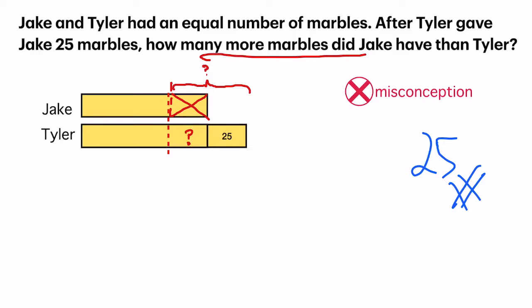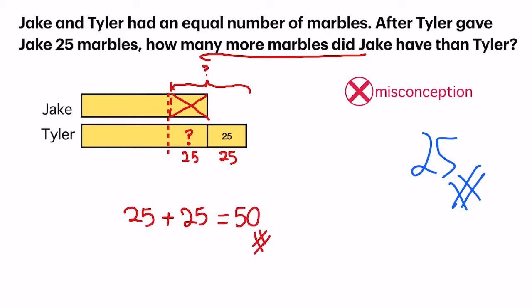It should be 25. How did I get to 25? Because before moving it down, on the top there were 25. It is the same length as this model. So 25 here should also be 25 at the bottom. So we will have our answer: 25 plus 25 equals 50.